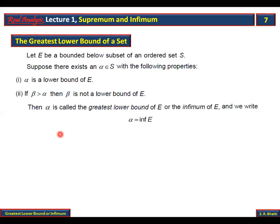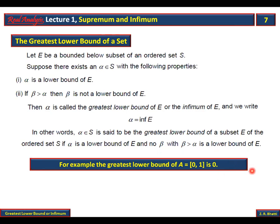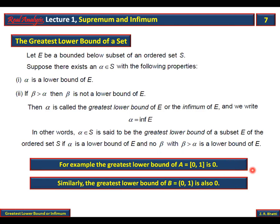We write it as alpha = inf(E). In short: alpha belonging to S is said to be the greatest lower bound of subset E of ordered set S, if alpha is a lower bound of E and no beta greater than alpha is a lower bound of E. For example, the greatest lower bound of [0,1] and (0,1) is zero. Zero is the lower bound, and no number bigger than zero is a lower bound. This example also shows that the greatest lower bound may or may not belong to the set itself.